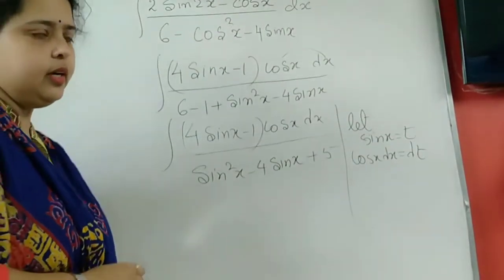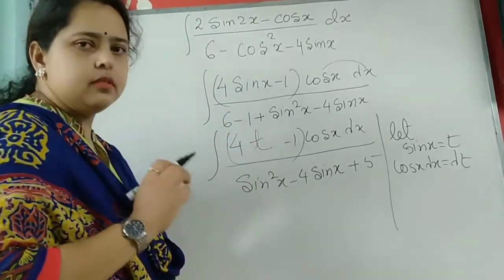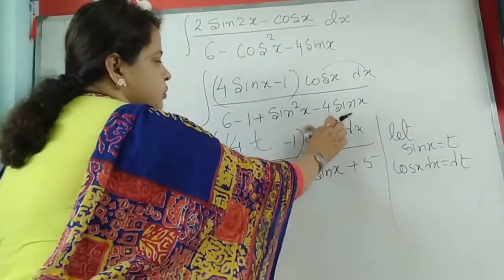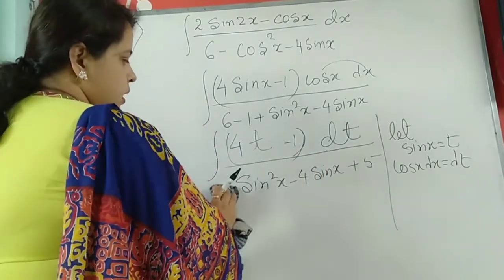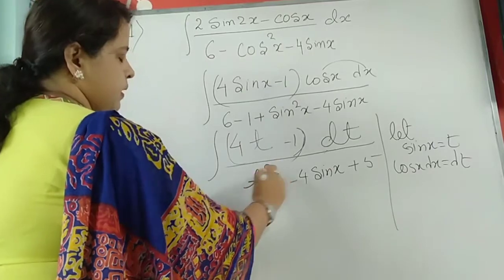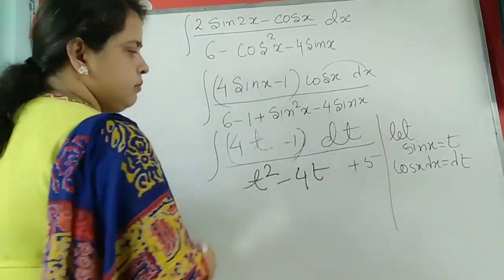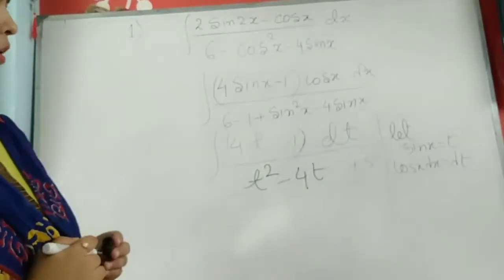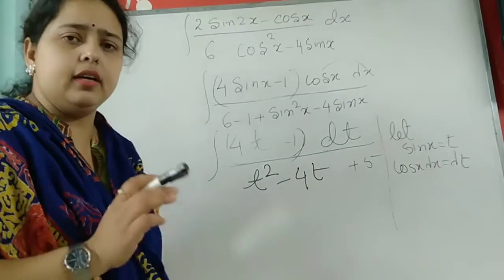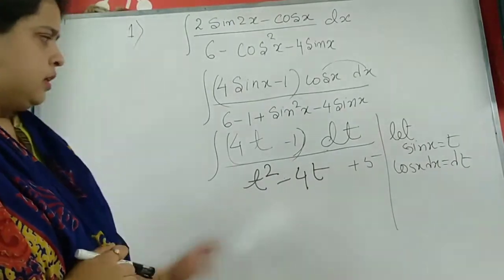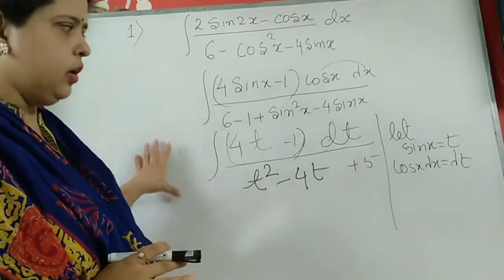The entire sin and cos will turn to t and dt. So sin(x) becomes t, and you can see dt in the numerator. sin²(x) is again t², minus 4sin(x) is minus 4t, plus 5. This is after converting sin and cos into the new variable t — this is the substitution method used here.